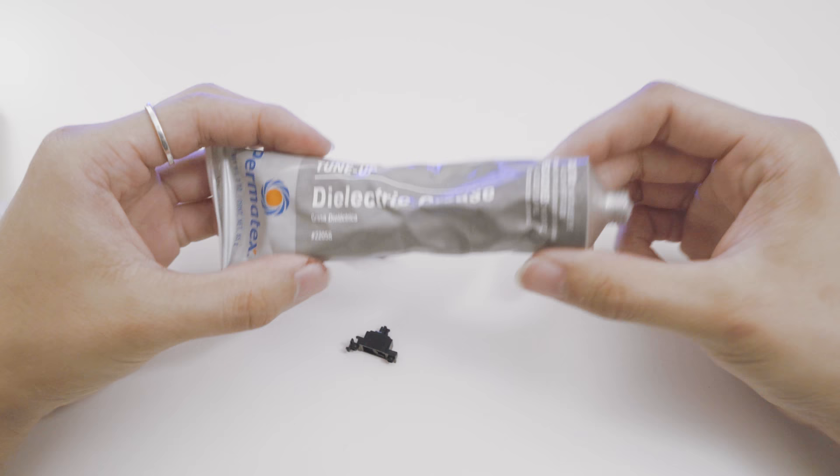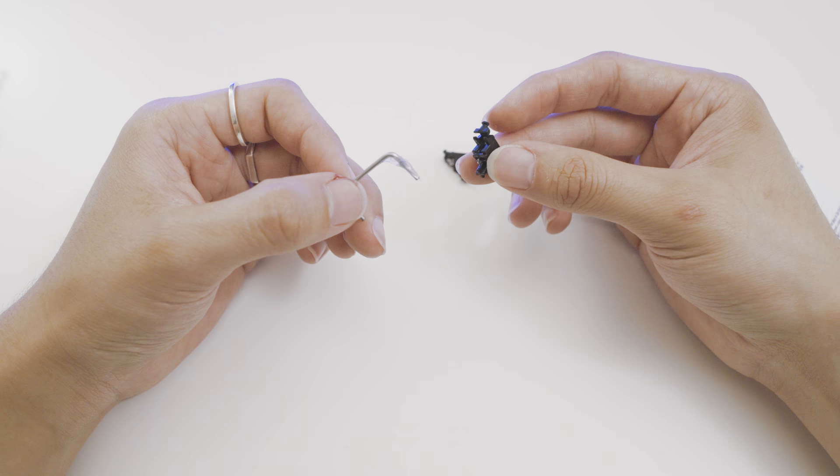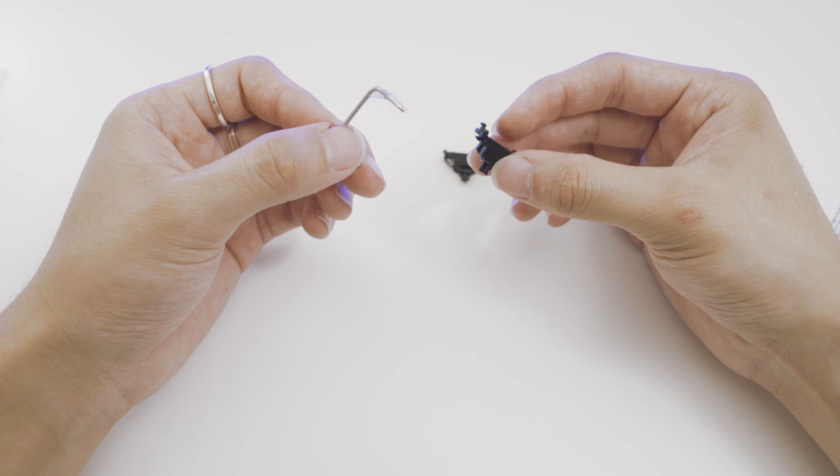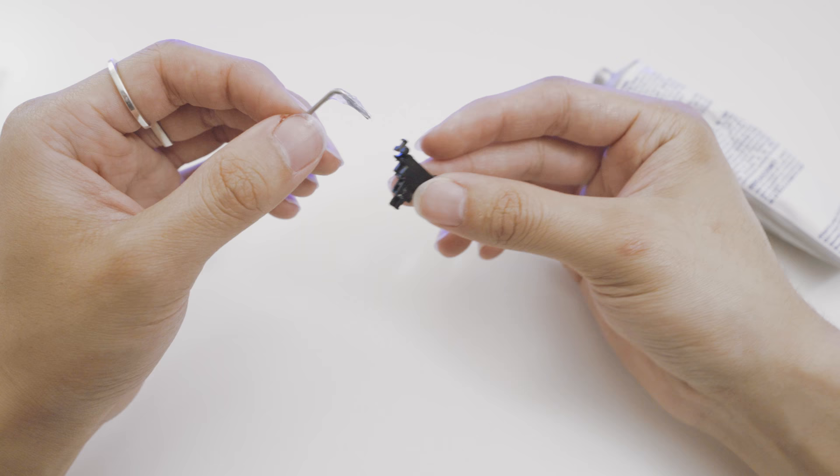Next up, we use the dielectric grease. Take your wire and begin by sticking it into your grease like so. Recall that when we reassembled the stabilizer, the side with two holes faces the front where the wire goes into. I first apply one coating of this dielectric grease by sticking the wire into the bottom of the holes, which is where the wire goes into.